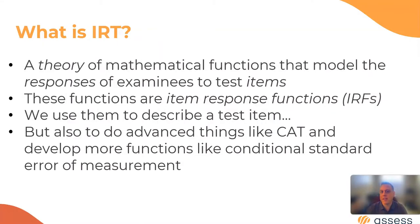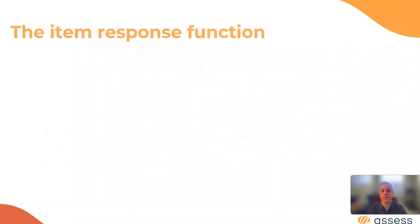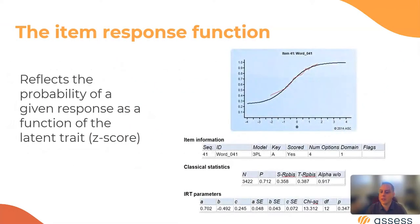It's going to be used to do some advanced things like develop adaptive tests, computerized adaptive tests or CAT, as well as develop some additional functions like conditional standard error of measurement or the test information function. So this item response function looks like the graph you see on the right there, and what this does is it reflects the probability of getting a response as a function of the latent trait or ability, which is kind of on a z-score metric. So that's why you see on the bottom there, this is called theta—psychometricians call it theta.